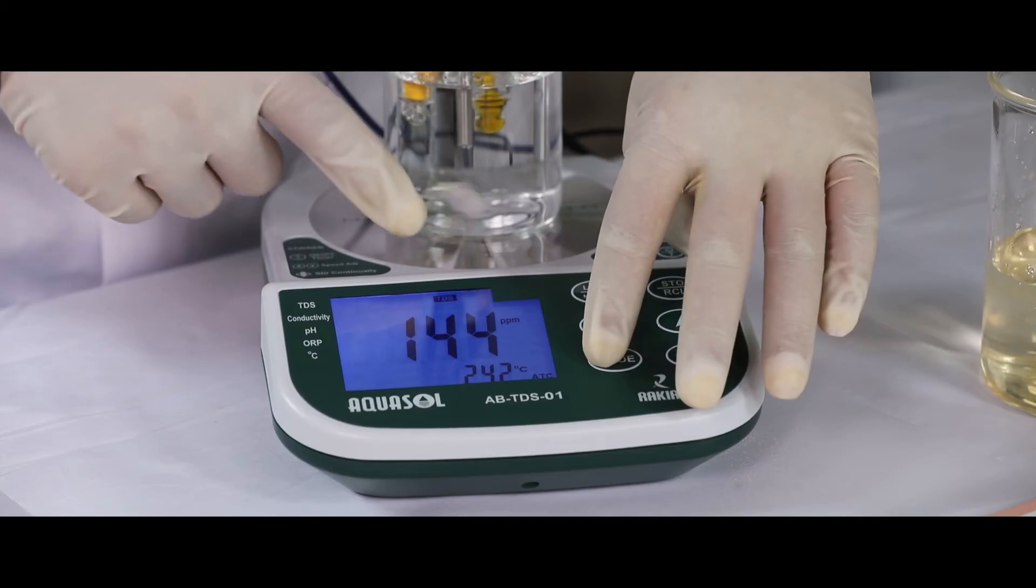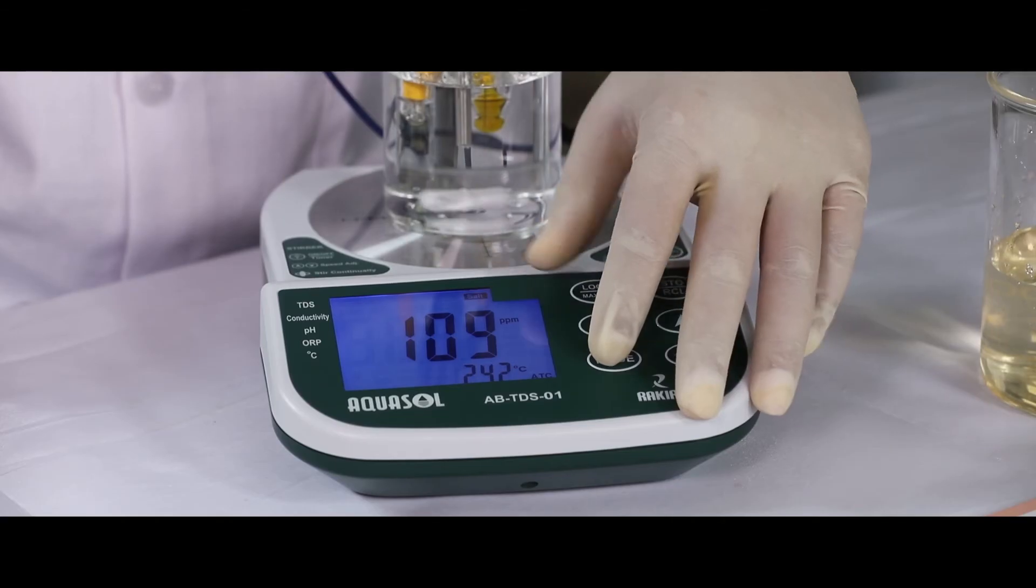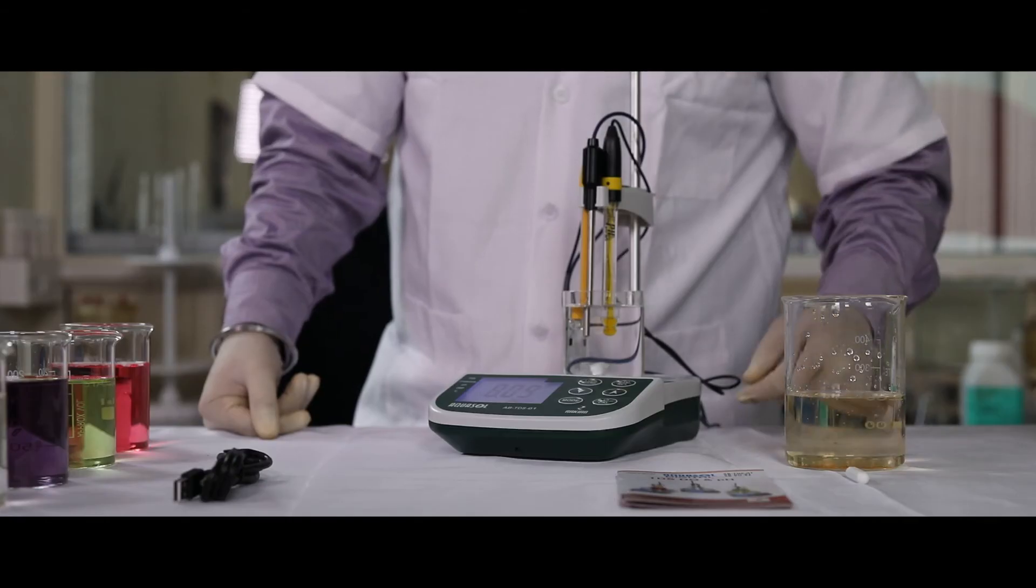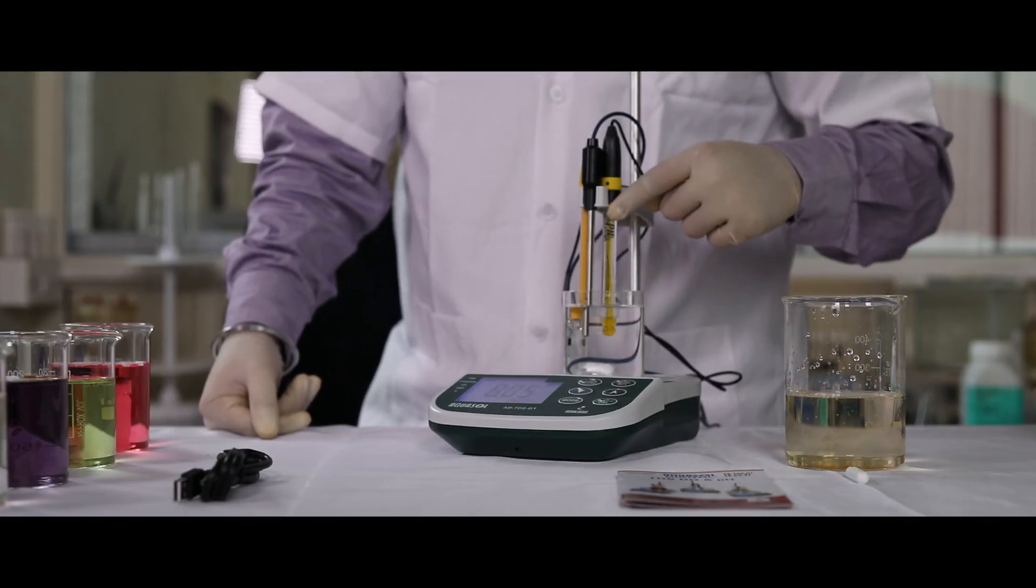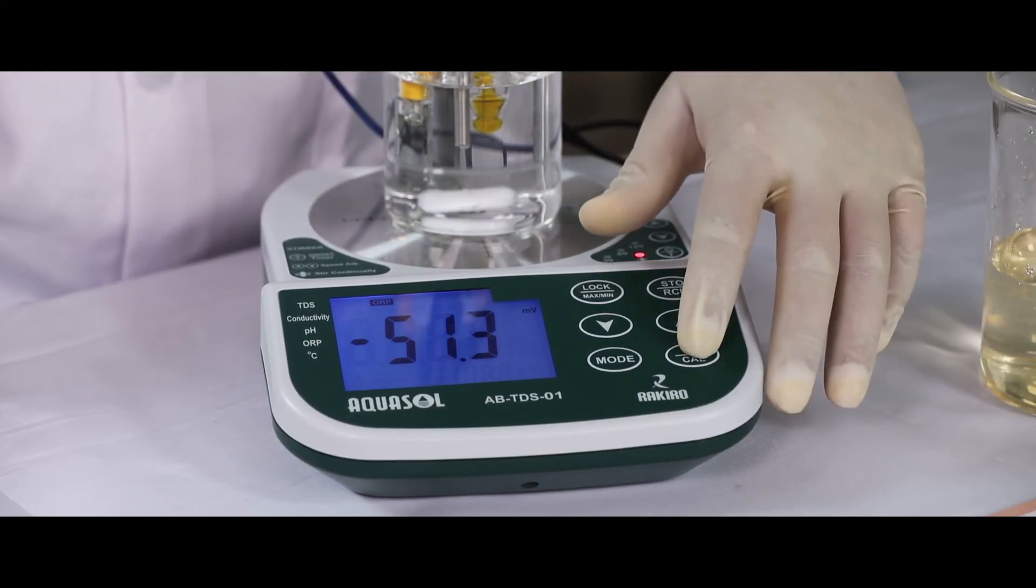Press mode key to see the TDS, conductivity, and salt value of the sample. You can replace the PH electrode for an ORP electrode for ORP readings of the solution.